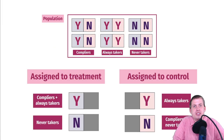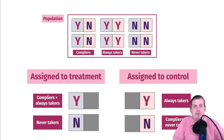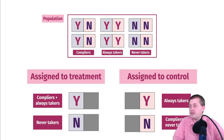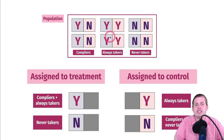What we really want is the effect of a program on people who actually listen and comply, because that's where we can measure a causal effect. If you assign an always taker to treatment, they're going to do it regardless, making the control group for always takers meaningless. We want to focus just on the compliers. In practice this is tricky, because we can't read people's minds.